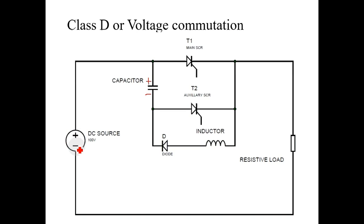So, the outer circuit is called power circuit and current flows through the main SCR and resistive load.